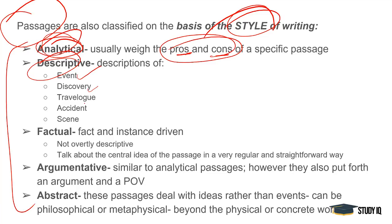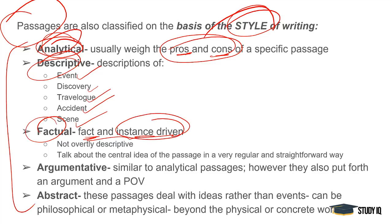Descriptive passages can include travel logs, accidents, and scenes — all things that describe. If we talk about factual passages, they are fact or instance driven, meaning they can be populated with examples. They are not overtly descriptive on the face of it, but they also fall under the descriptive category, and the central idea of the passage is very straightforward.